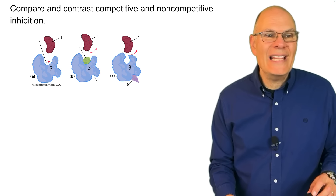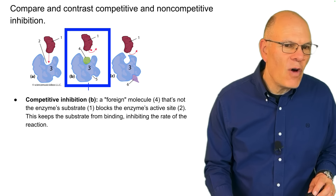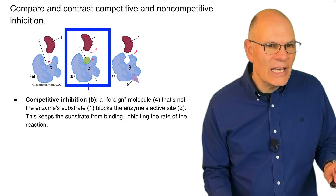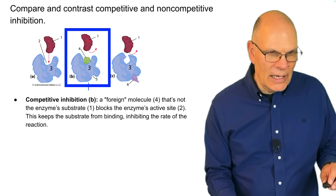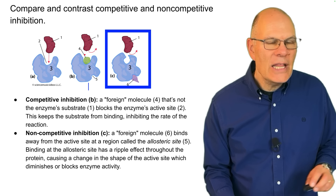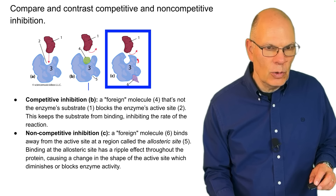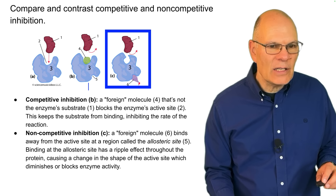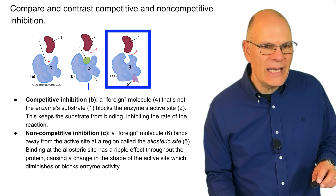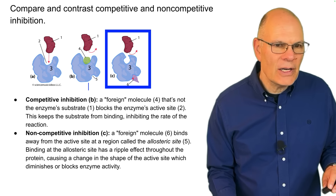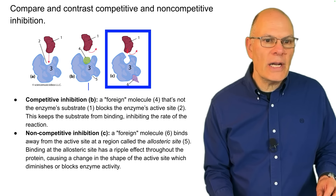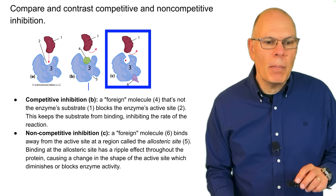Compare and contrast competitive and non-competitive inhibition. In competitive inhibition, a foreign molecule blocks the enzyme's active site, which keeps the substrate from binding and inhibits the rate of the reaction — it's inhibiting by competing for the active site. In non-competitive inhibition, a foreign molecule binds away from the active site at a region called the allosteric site. Binding at the allosteric site causes a ripple effect throughout the protein that changes the shape of the active site, so the substrate can no longer bind and enzyme activity is diminished or blocked.